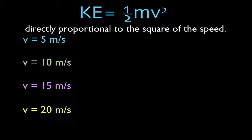But what we want to look at today is the fact that the kinetic energy is directly proportional to the square of the speed. And what does that mean for the kinetic energy? And we're going to calculate the kinetic energy of an object when it has four different speeds or four different velocities: 5, 10, 15, and 20.